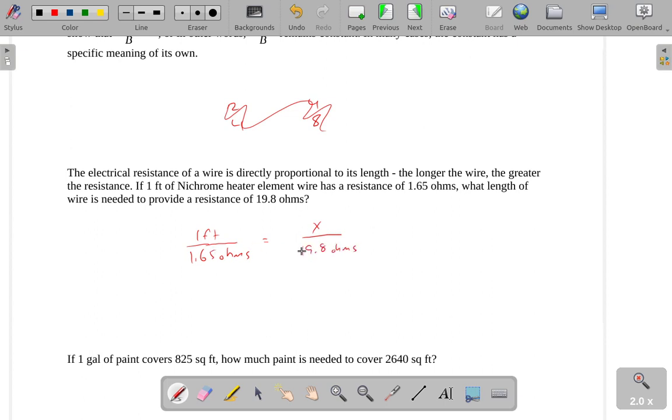When I'm setting up these ratios, the only real important thing is that I keep them set up in the same way. This first ratio is the one foot example. So one foot of wire has 1.65 ohms of resistance. Once I've set this up, my lengths need to be on the top part of the fractions, and my resistance has to be on the bottom part of the fraction. That's why I said X over 19.8.